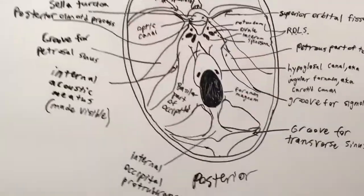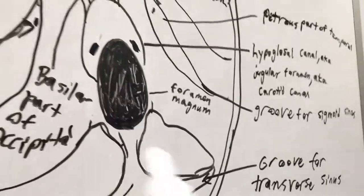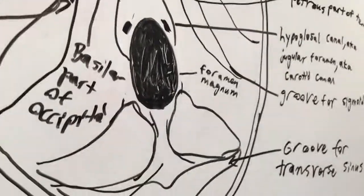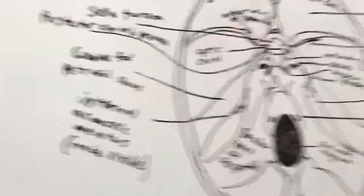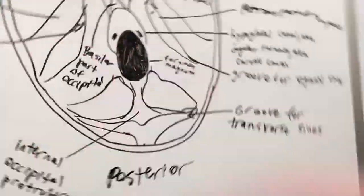So obviously this is where the brain is supposed to go. As you can see from this giant hole, that's the foramen magnum and that is where the medulla oblongata is supposed to go and where the spinal cord is supposed to go. But let's start from here from the top.